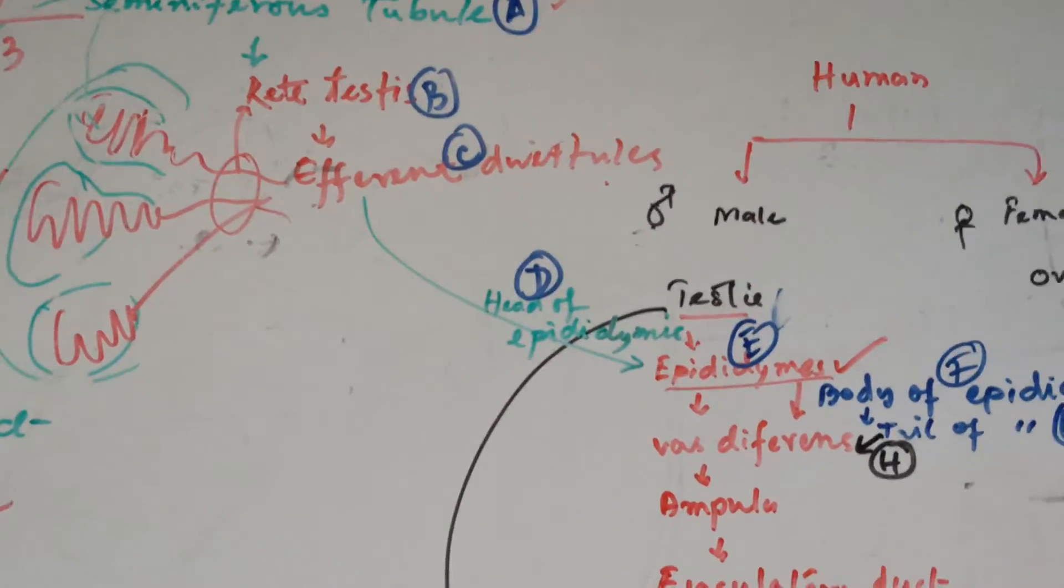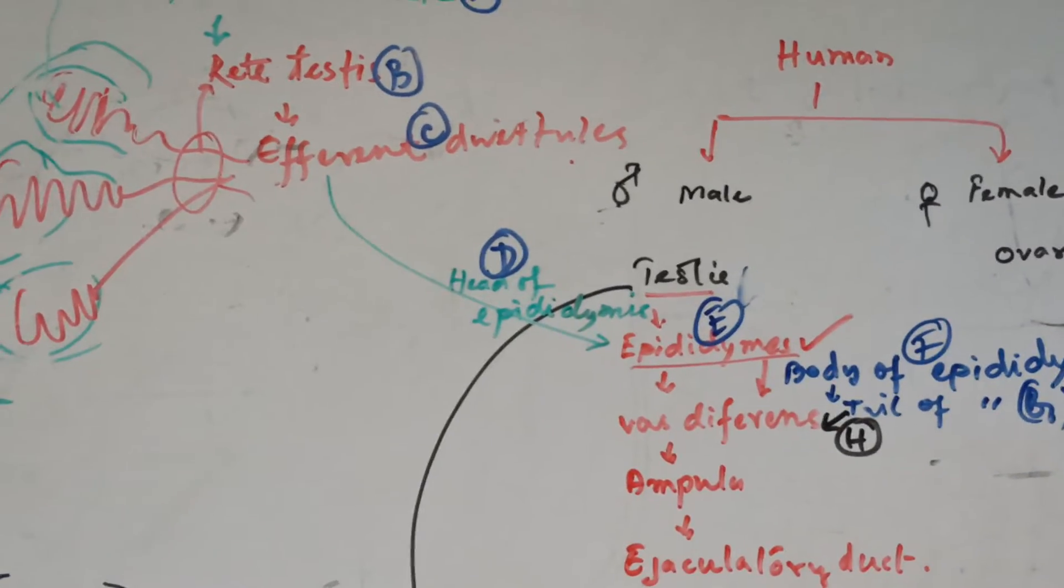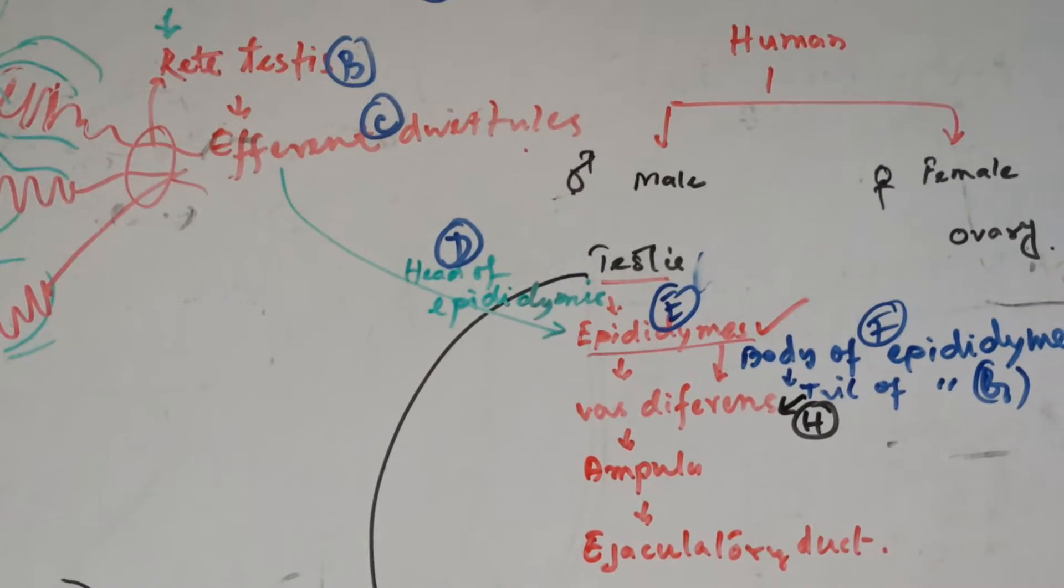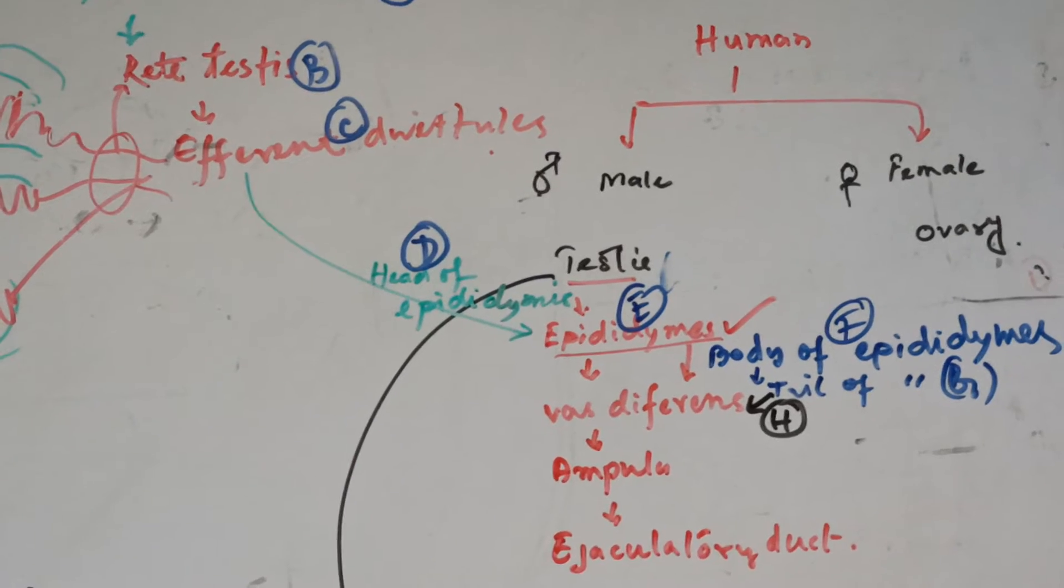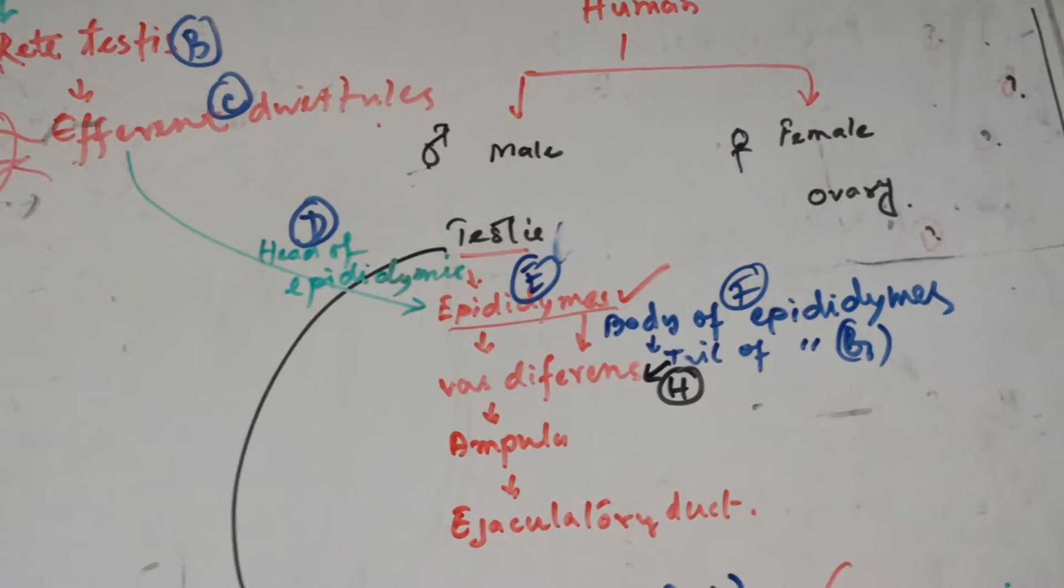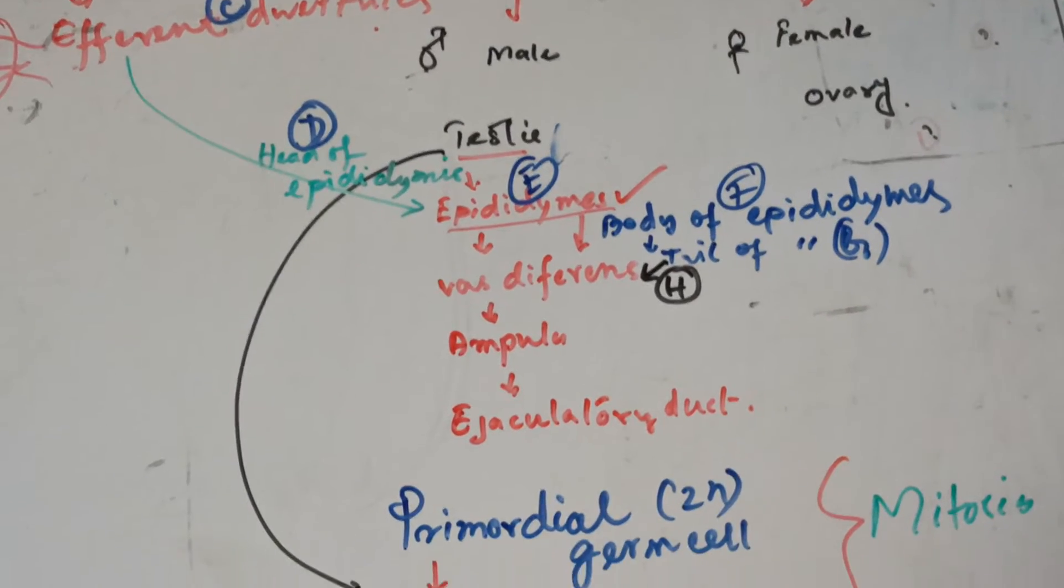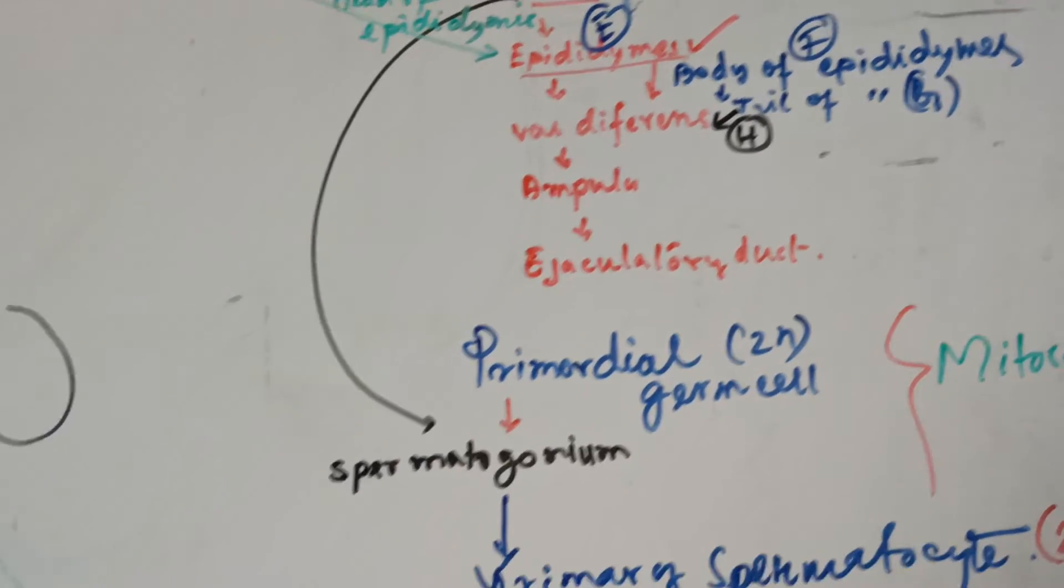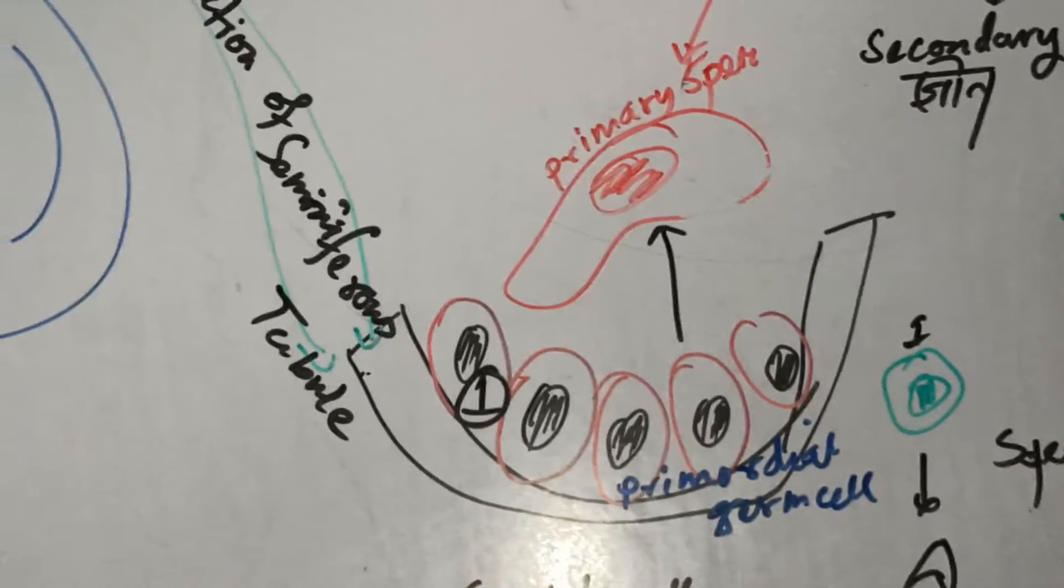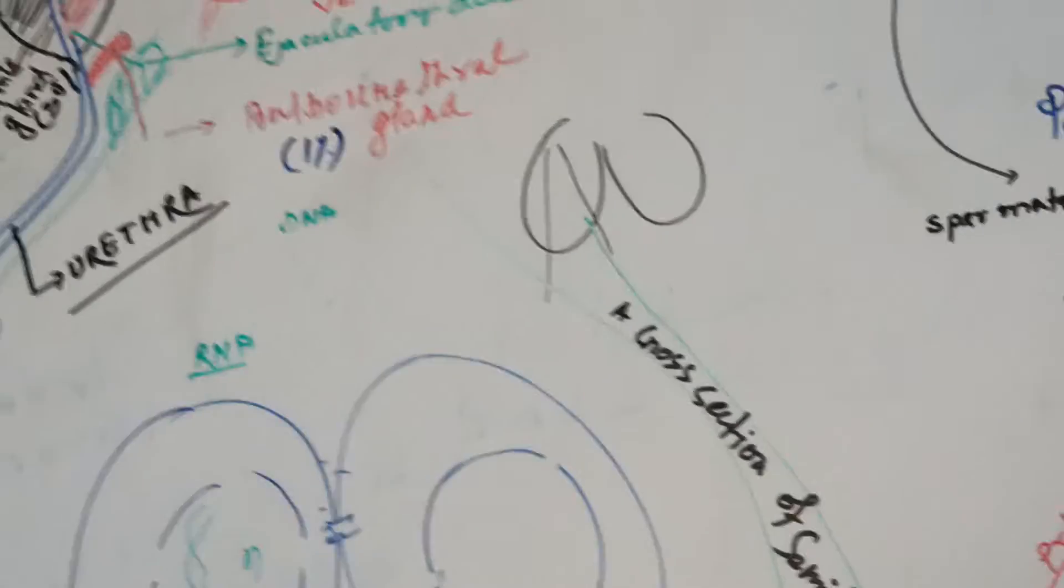What happens in the seminiferous tubules? If you take a section from the seminiferous tubules, we have the epididymis with efferent ductules, the body of the epididymis, the tail of the epididymis, and then the vas deferens and ampulla. You can see this structure from the scrotum sac.